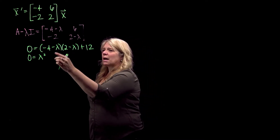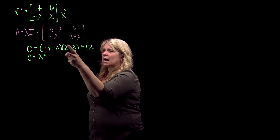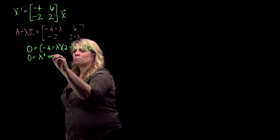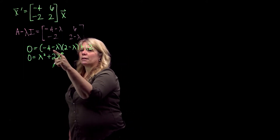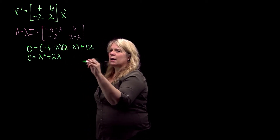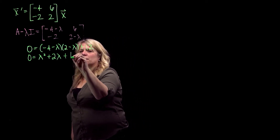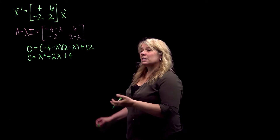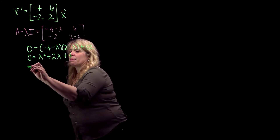On the lambda term, I'll have a plus 4 lambda and a minus 2 lambda, so plus 2 lambda. And then I'll have a negative 8 and a plus 12, so plus 4. This does not factor, so I'm going to use the quadratic formula.